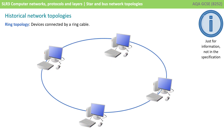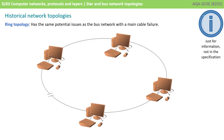An alternative approach would be to connect them in a ring, as illustrated here. But again, you've got a very serious problem: if one of the connections breaks anywhere in the network, then all the computers are going to lose their connection because of the way the ring network operates.